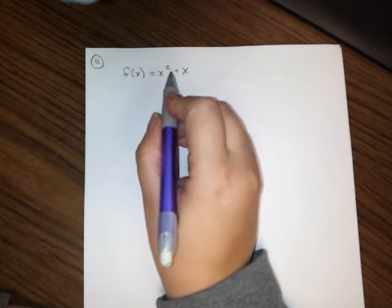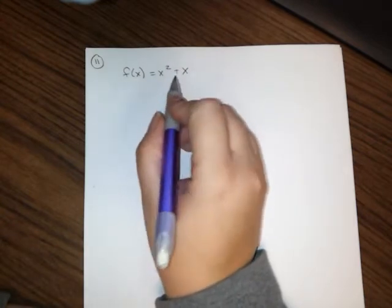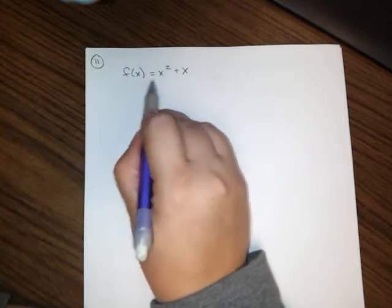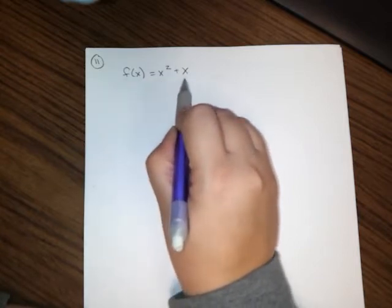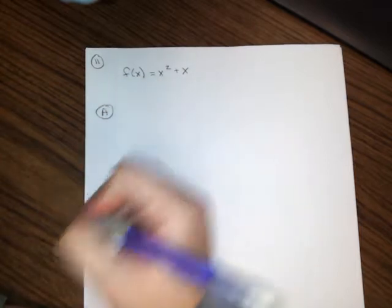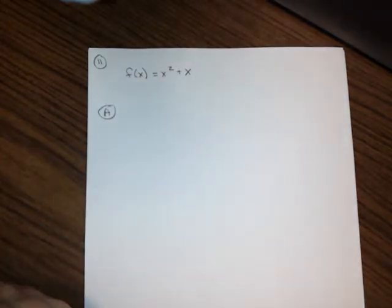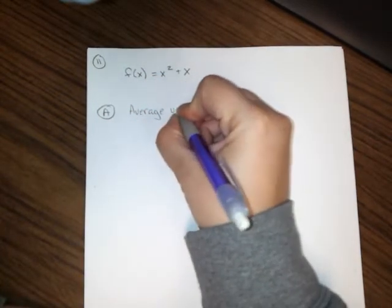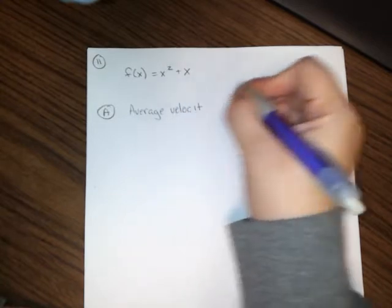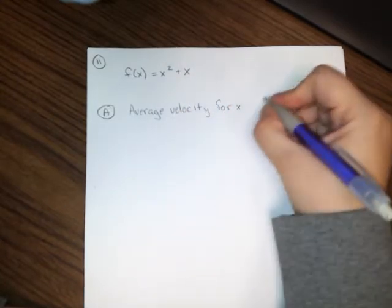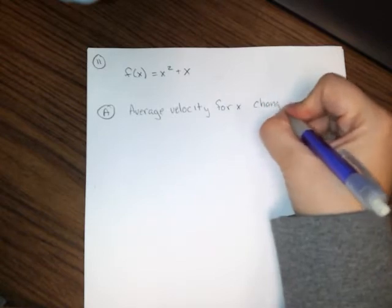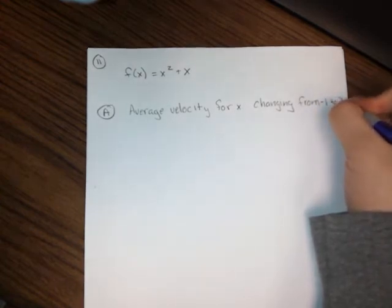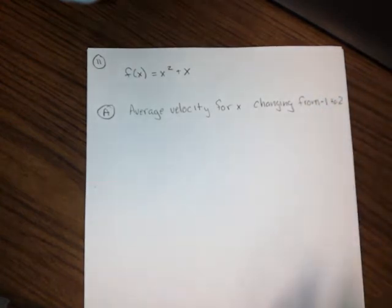So the function they're giving me, and yours might differ just a little bit, or the numbers that they're asking you to plug in might differ just a little bit. But my function is f of x equals x squared plus x. And for part a, they're asking us for the average velocity, and in my case it's average velocity for x changing from negative 1 to 2. So that's what they're asking for, average velocity.